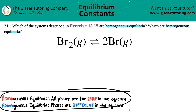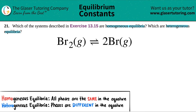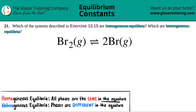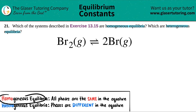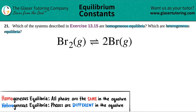Here are the rules. The difference kind of goes back to when we learned homogeneous mixtures and heterogeneous mixtures. Homogeneous equilibrium is when all of the phases are the same throughout the balanced equation. So homogeneous equilibria is when all the phases in the balanced equation are the same.